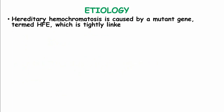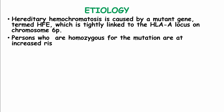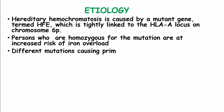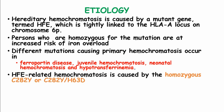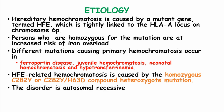Hereditary hemochromatosis is caused by a mutant gene termed HFE. This gene is tightly linked to the HLA-A locus on chromosome 6p. Persons who are homozygous for the mutation are at increased risk of iron overload, and different mutations causing primary hemochromatosis occur in cases of ferroportin disease, juvenile hemochromatosis, neonatal hemochromatosis, and hypotransferrinemia. HFE-related hemochromatosis is caused by a homozygous C282Y or C282Y/H63D compound heterozygote mutation. The disorder is an autosomal recessive disease.